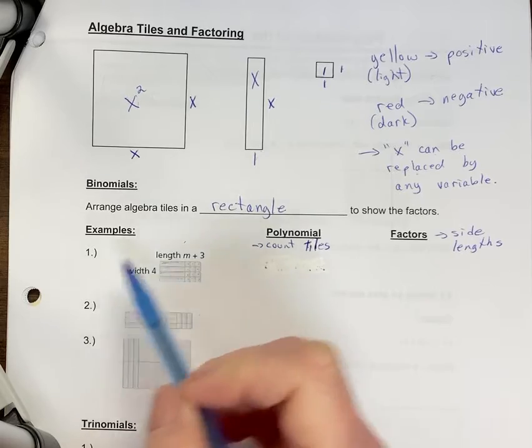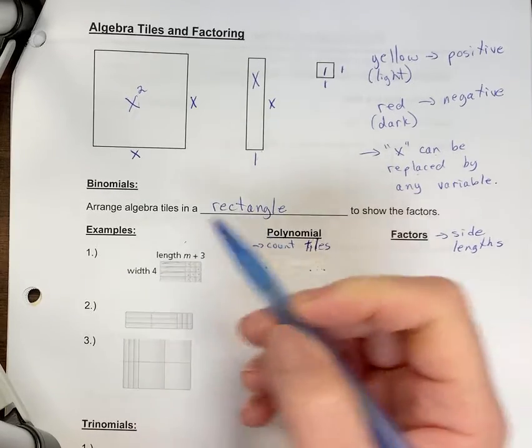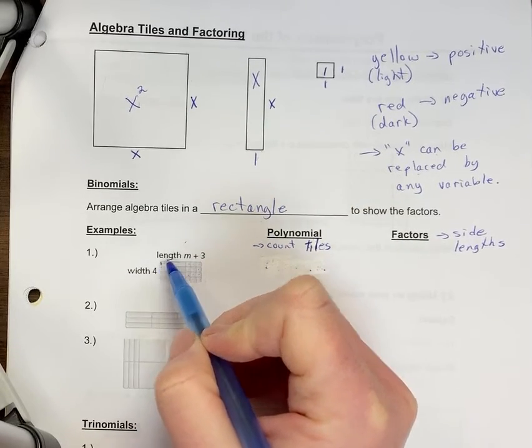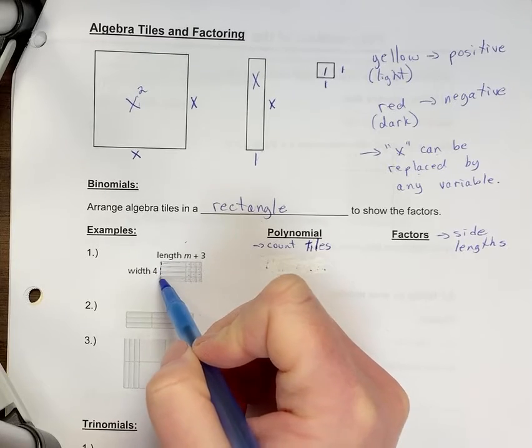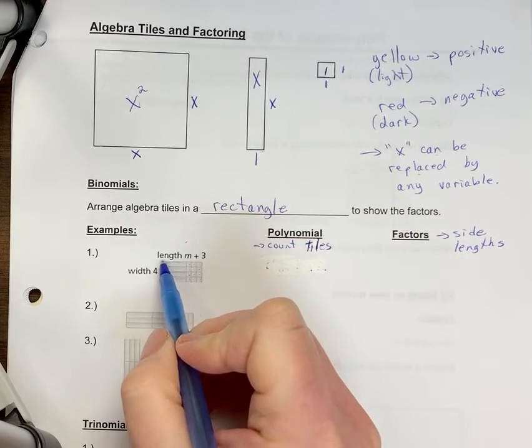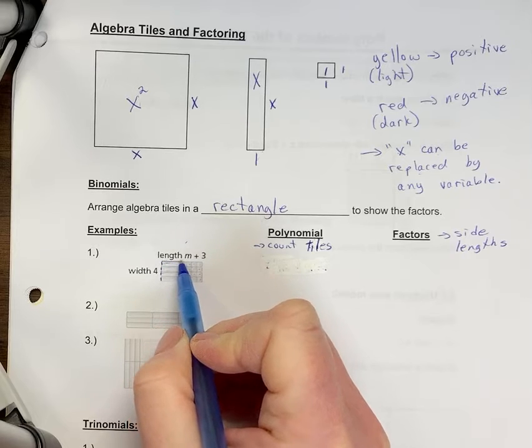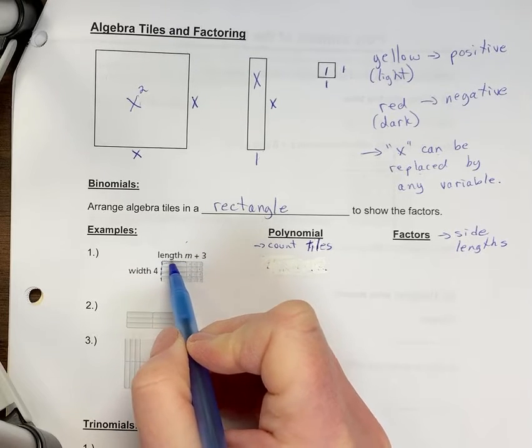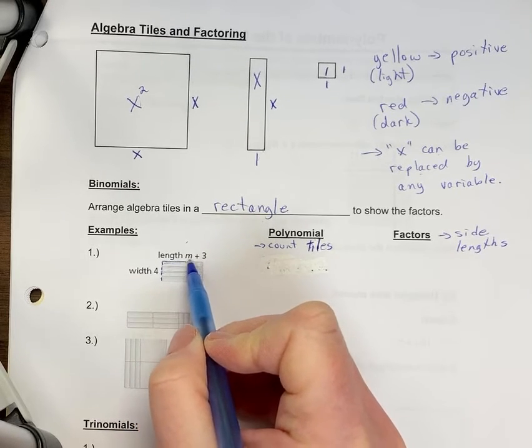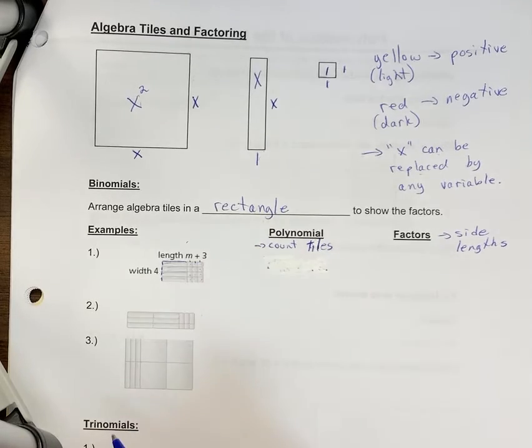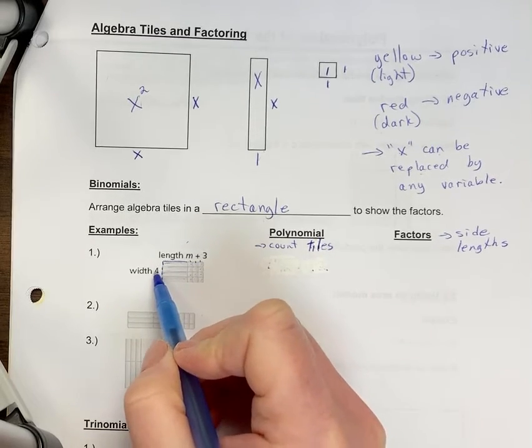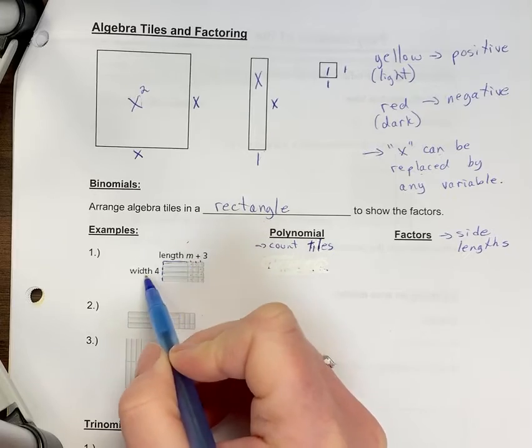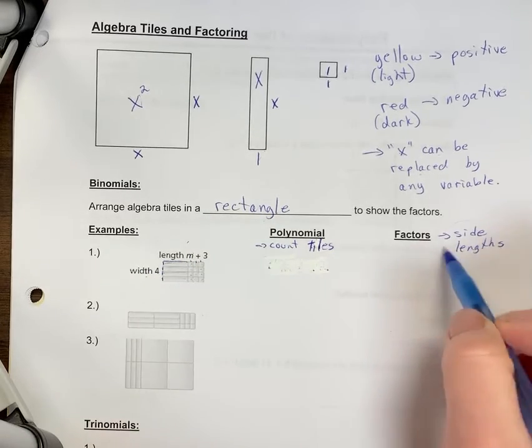So let's look at example one here. Now they've already wrote width is four. And what that means is they're counting this one, two, three, four, because that's that one's tile shape. Along here, the length is m rather than x, so one length, plus you have one, two, three there. So this means four times m plus three. That's actually the factors. That's what we mean by the side length.